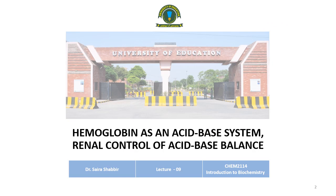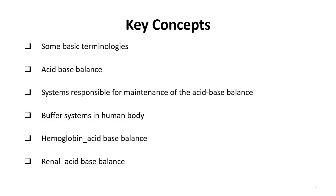Today's lecture is about acid-base balance by hemoglobin as well as renal control of acid-base balance. We shall start with a review of basic terminologies that will help us follow the rest of the lecture. Then there is a discussion about which acids and bases are involved in acid-base balance and which systems can regulate them, with a focus on hemoglobin and renal acid-base balance.